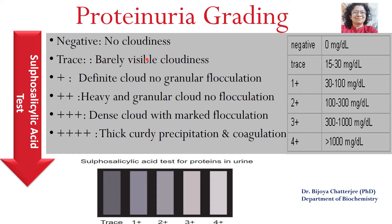When there is no cloudiness or no precipitate after performing the sulfosalicylic acid test, proteinuria is absent — 0 milligrams per deciliter. If there is barely visible cloudiness, as shown in this plate, it is present in traces, meaning 15 to 30 milligrams per deciliter.